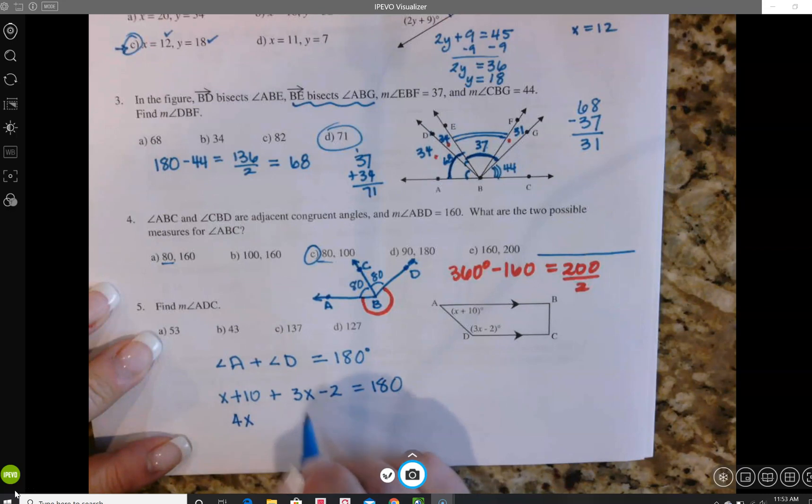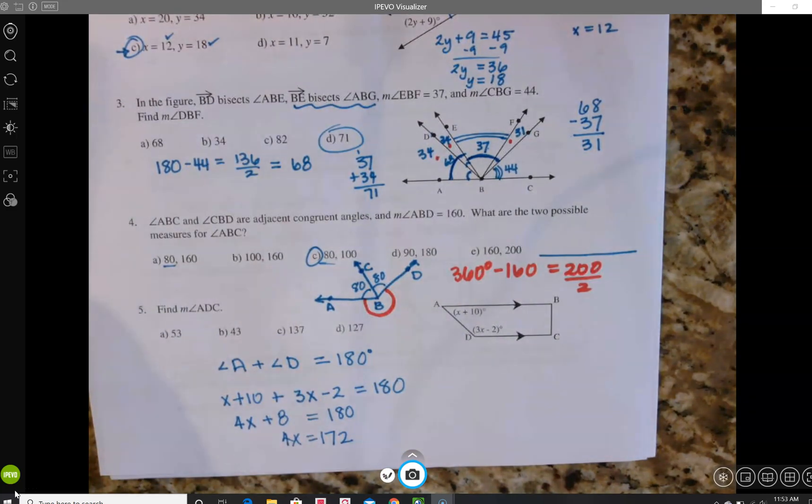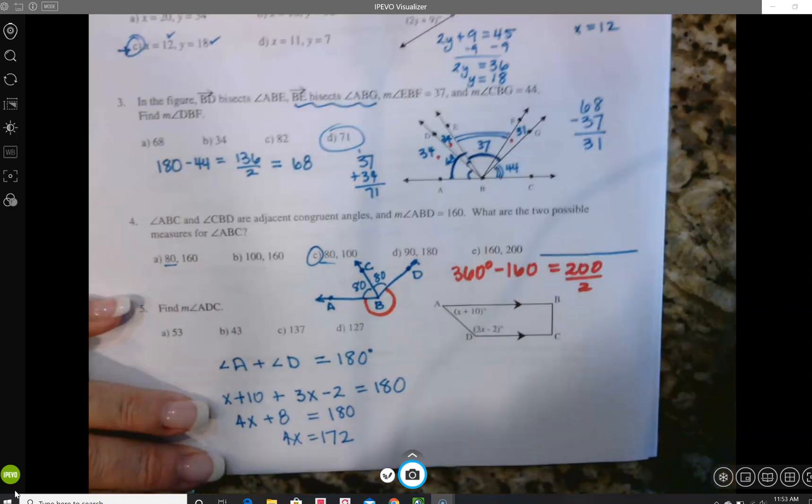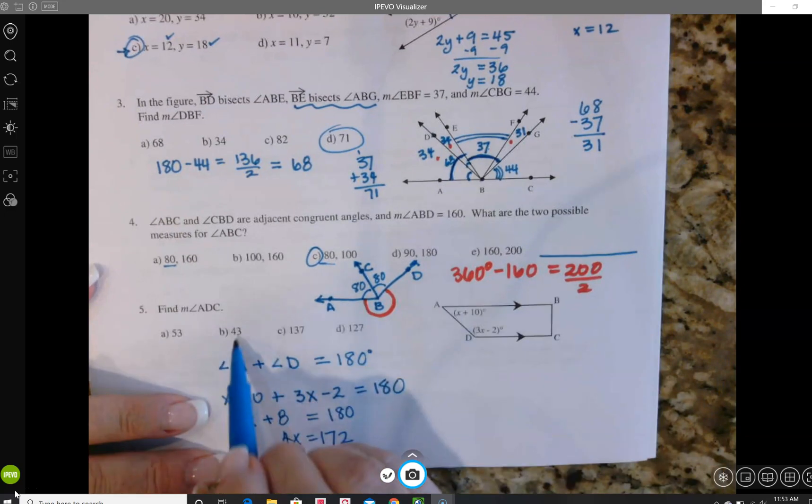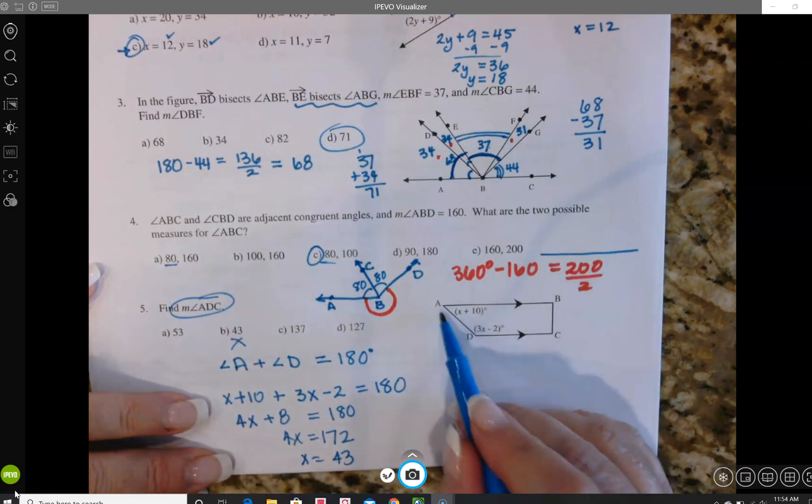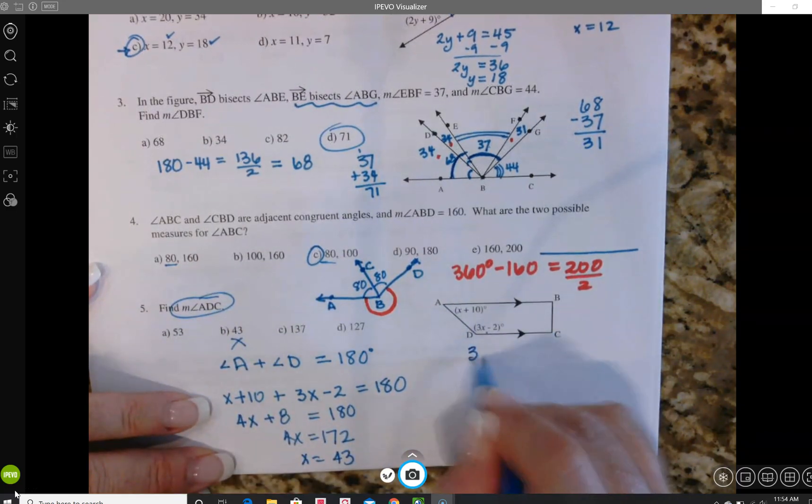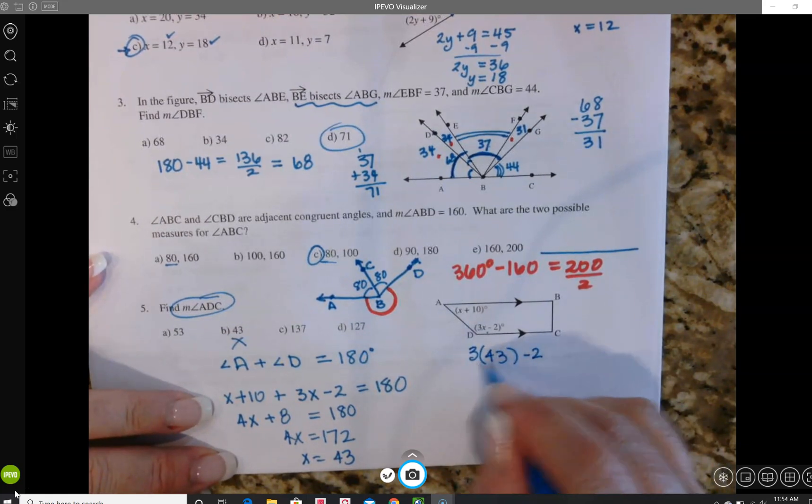So that gives me 4x plus 8 equals 180. Subtract my 8, 4x equals 172, and then I've got to do 172 divided by 4, and I get 43 for x. And notice that is one of your choices, so it would be very tempting to pick that, but we have to look at what we're being asked to find. So ADC, that's this one, so I'm going to go 3 times 43 minus 2 to figure out what that is. So 3 times 43 is 129 minus 2, I get 127.